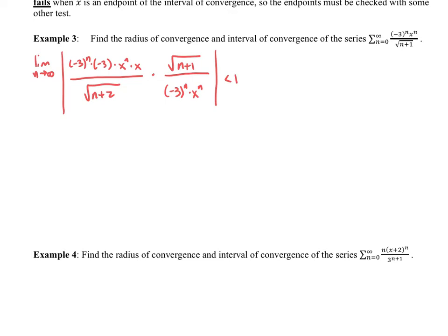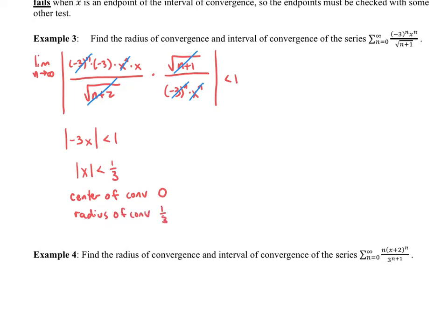I am simplifying this a little bit more quickly than we did earlier in the sections, just because we want to simplify the ratio test a little bit earlier. So we have the square root of n plus 2 in the denominator times the square root of n plus 1 divided by negative 3 to the n times x to the n, and we know it is less than 1 if it is going to be convergent. So we have x to the n cancels and negative 3 to the n cancels. The square root of n plus 1 divided by the square root of n plus 2 goes to 1 as n goes to infinity, so we are left with the absolute value of negative 3 times x is less than 1, which simplifies to the absolute value of x minus a is less than 1 third. So we know the center of convergence is 0, the radius of convergence is 1 third, and the initial interval of convergence is negative 1 third to positive 1 third.